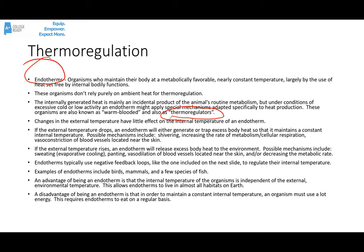If the temperature gets too cold, they can speed up their rate of metabolism to generate more body heat. They also have other adaptations designed to help regulate that body temperature. Changes in the external temperature have little impact on the internal temperature of the endotherm. If the external temperature drops, an endotherm will either generate or trap excess body heat to maintain a constant internal temperature. Some possible mechanisms include shivering, increasing the rate of metabolism or cell respiration, and vasoconstriction — narrowing of the blood vessels located near the skin — to keep heat in the body.